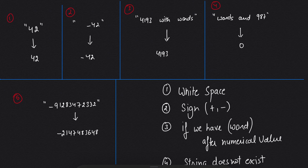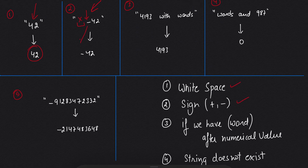I have taken all the examples given in the question. In example one, we are simply given a string with a numerical value and we will simply return it as 42. In example two, first of all we have some spaces, and it was clearly mentioned in the question that we need to discard the whitespace, so we will discard it. Then we will take care of the sign and use the numerical value as-is, so it will become minus 42.